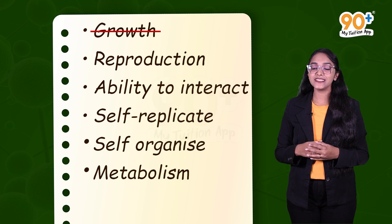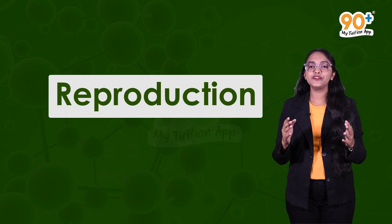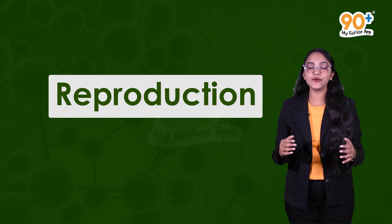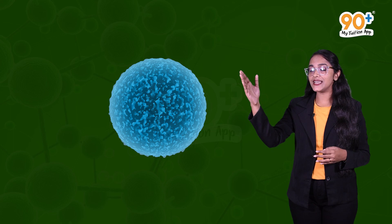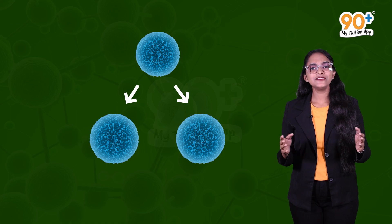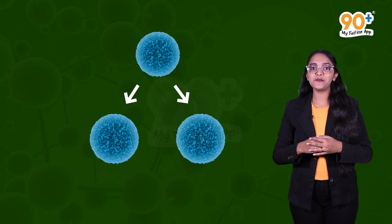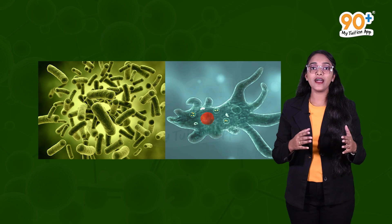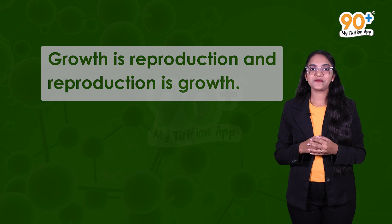Next is one of the important characteristics — reproduction. Reproduction is the process of producing offspring to continue the next generation. It is a boon to the living world because without reproduction, life cannot continue on our planet. For unicellular organisms like bacteria, amoeba, and unicellular algae, growth and reproduction are not separated — growth is reproduction and reproduction is growth.